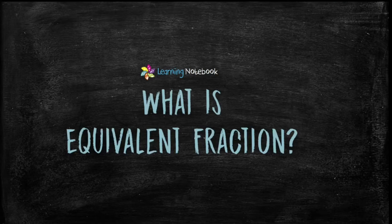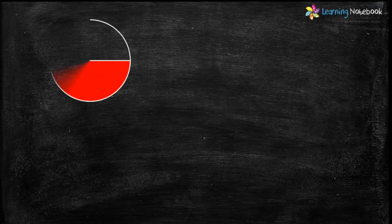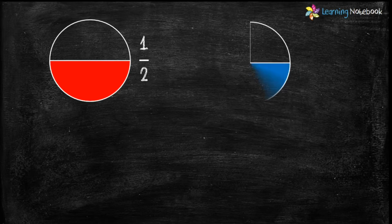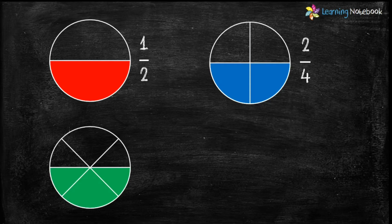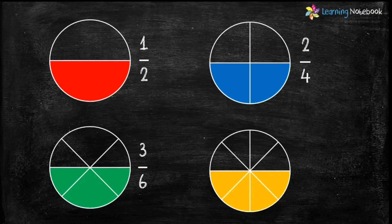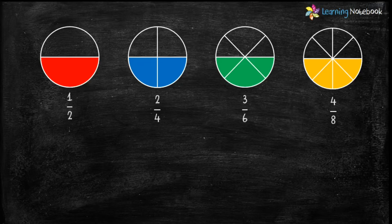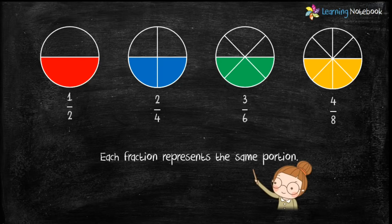Now let's revise what is an equivalent fraction. Students, can you tell me the fraction of the colored portion in this figure? Yes, it is 1 by 2. Now what is the fraction of the colored portion in this second figure? It is 2 by 4. Tell me the fraction of the colored portion in the third figure — it is 3 by 6. And finally, can you tell me the fraction of the colored portion in this last figure? It is 4 by 8.